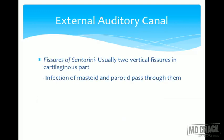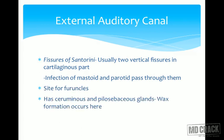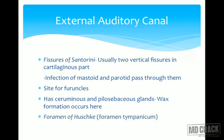There are named fissures in the external auditory canal. The fissures of Santorini are two vertical fissures in the cartilaginous part; infections of the mastoid and parotid pass through them. The cartilaginous part also contains hair follicles making it a site for furuncle formation, and has ceruminous and pilosebaceous glands for wax formation. The foramen of Huschke, also known as foramen tympanicum, is present in the antero-inferior part of the bony external auditory canal.